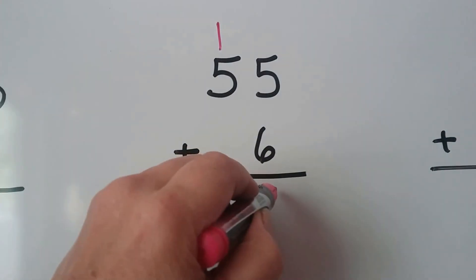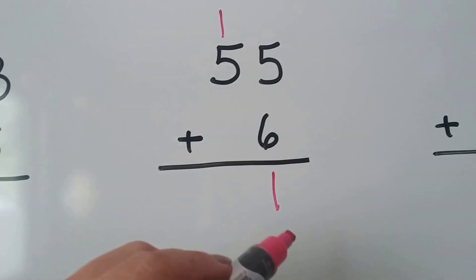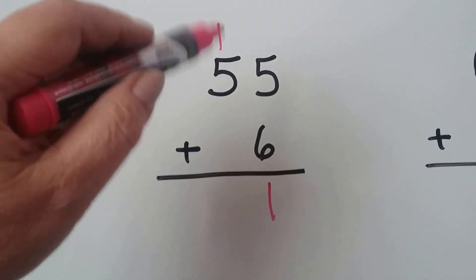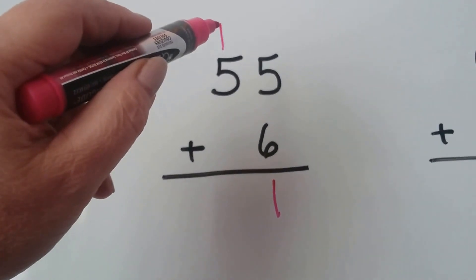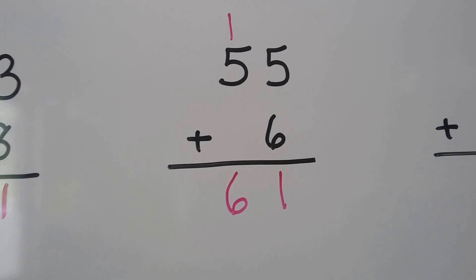We regroup the 1 from the 11 and the other 1. We have our 11 here. Now we add the tens. We add the 5 and the regrouped 1 as a 6. And that also equals 61. Let's try another one.